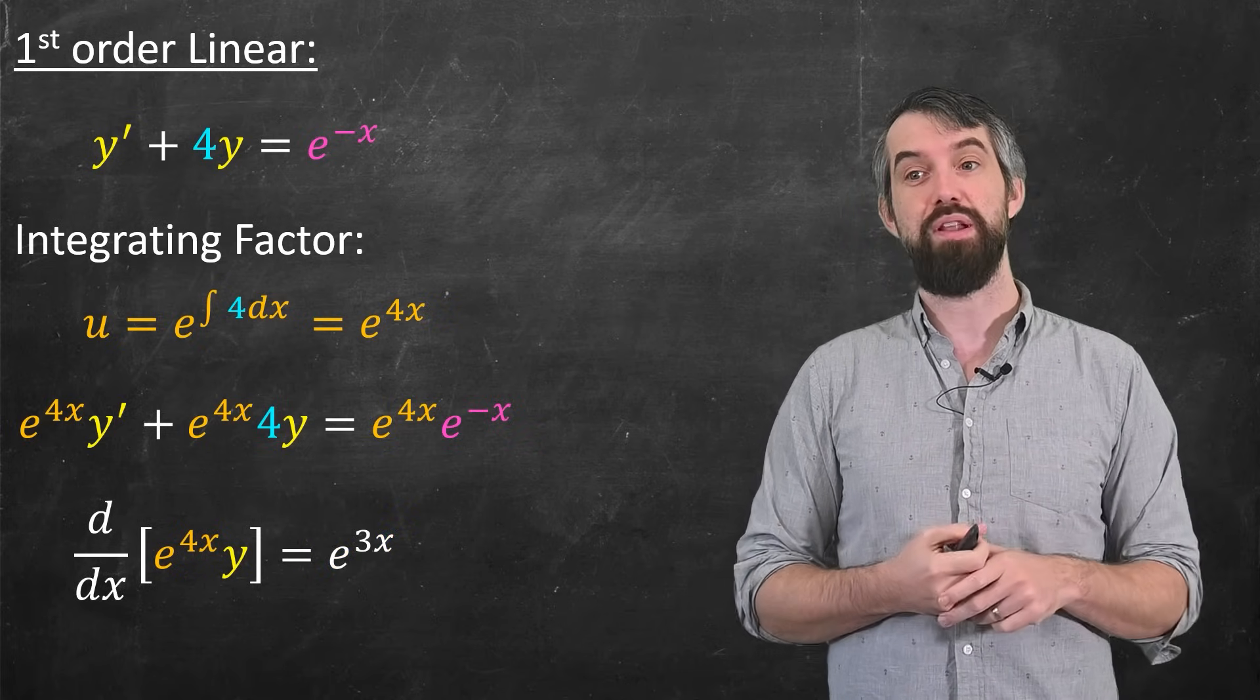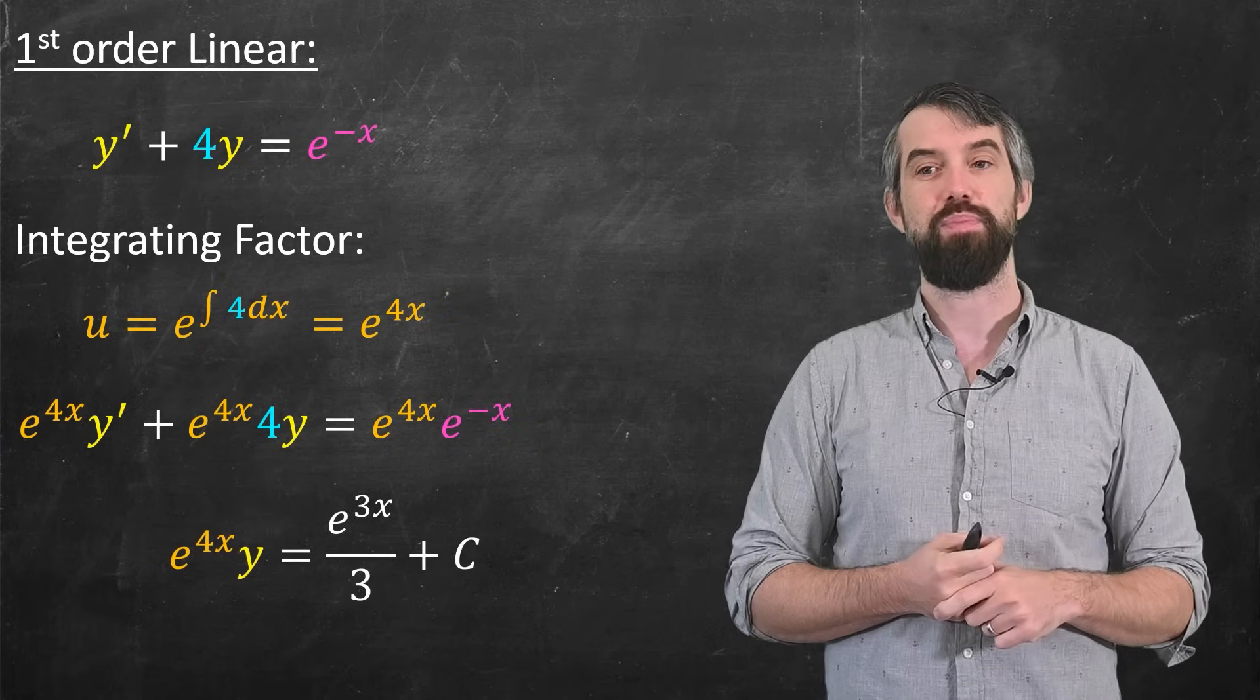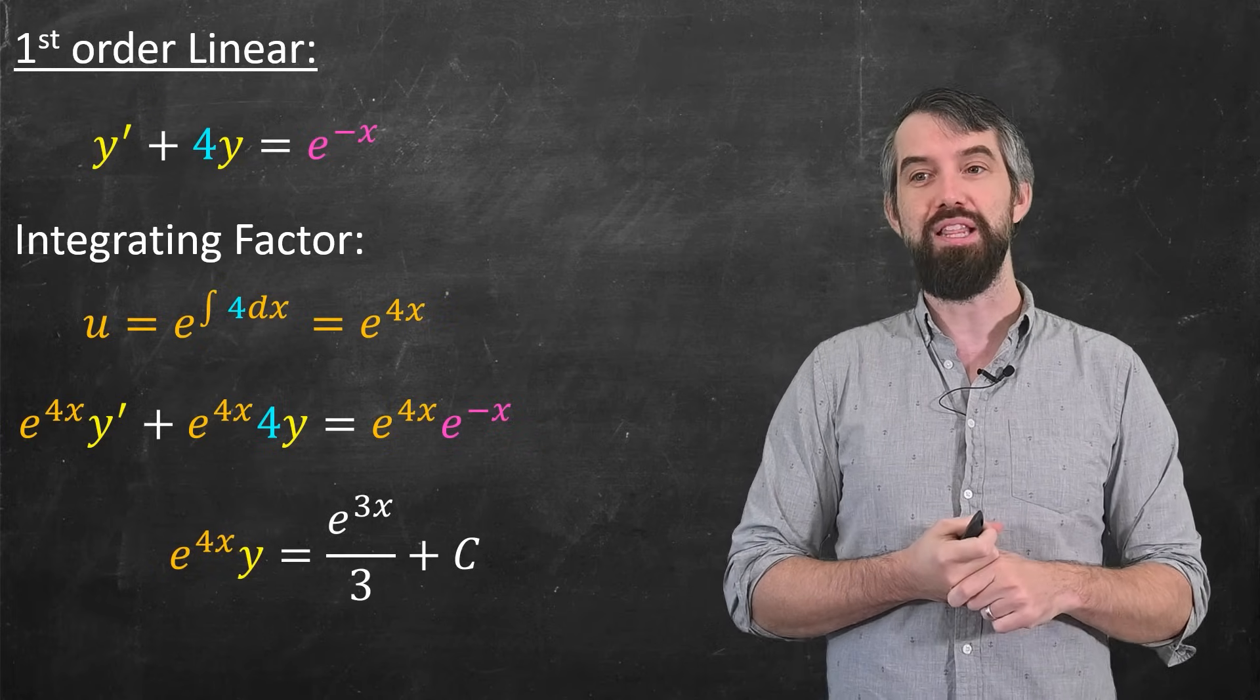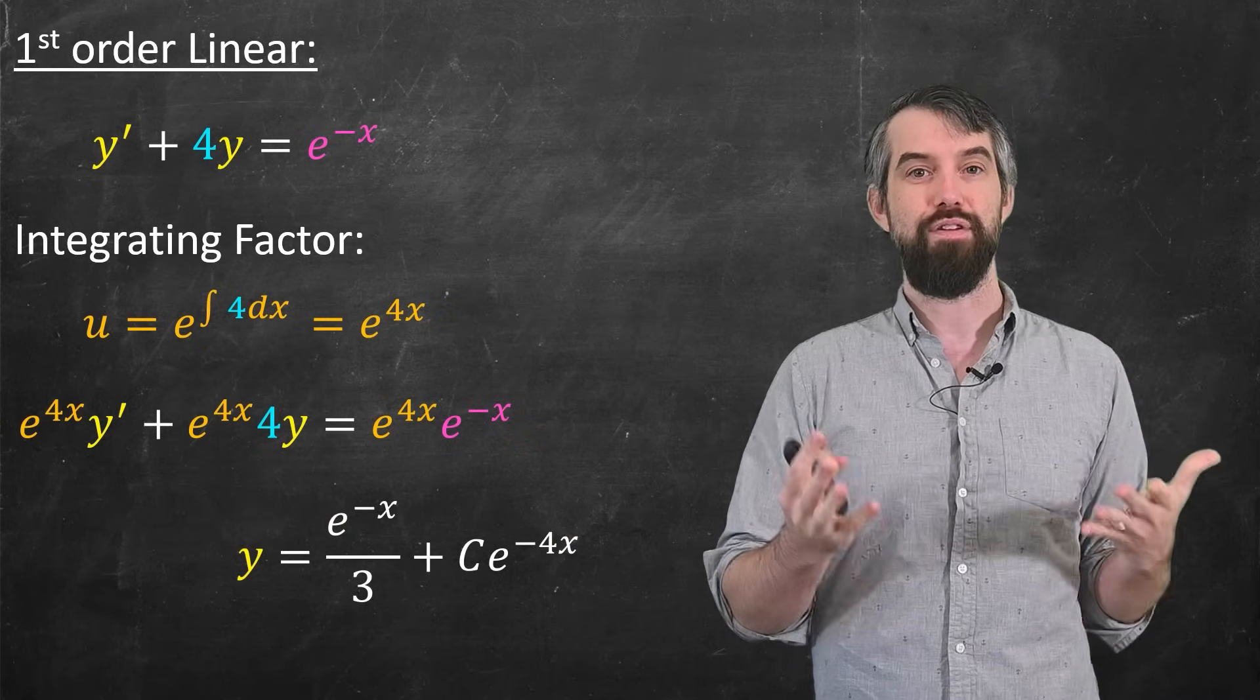And then the method is pretty simple from here. I integrate both sides, that gets me rid of the derivative, introduces a plus c. And then finally to get the y, I divide out by the e to the 4x, move it to the other side, I have my solution.